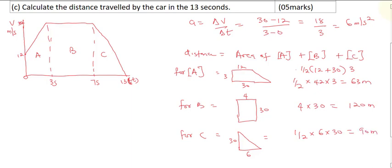To get the total distance traveled in 13 seconds, sum up all the areas: 63 plus 120 plus 90 = 273 meters. And as easy as that, you can solve this question. For recap: first, draw your graph; second, calculate the acceleration from the graph; and to get the distance covered, calculate the area of the shapes — splitting it into a trapezium, a rectangle, and a triangle.